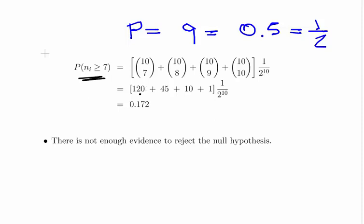So essentially working that out we get 120 plus 45 plus 10 plus 1 times 1 over 2 to the power of 10. And then working that out we get 0.172.